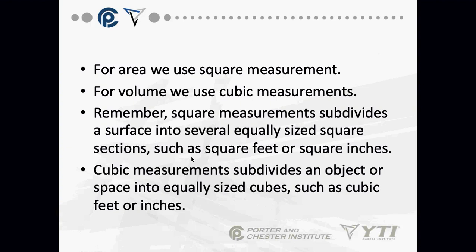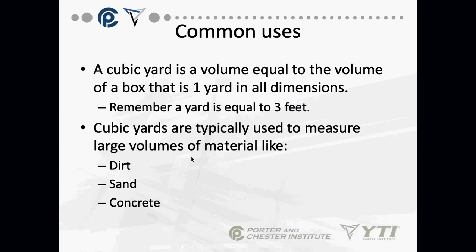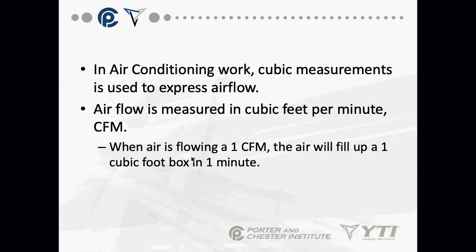Cubic measurements subdivide space into equal-size cubes, such as cubic feet or inches. For a box with a base of 4 by 6 inches and a height of 10 inches, the volume is 4 times 6 times 10 equals 240 cubic inches. In air conditioning, we normally use cubic feet or cubic inches — cubic yards are more for construction like dirt, sand, and concrete.